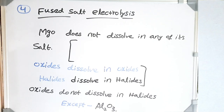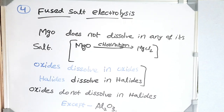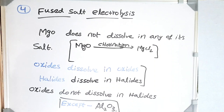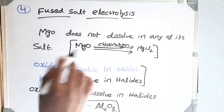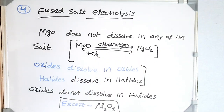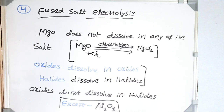For fused salt electrolysis of MgO — just like we did for aluminium — magnesium does not dissolve in any of its salts. Oxides dissolve in oxides and halides dissolve in halides, but oxides do not dissolve in halides, except for alumina, which made the Hall–Héroult process possible. Since MgO cannot dissolve in any of its salts, we need to convert it through a process called chlorination to produce MgCl₂, followed by fused salt electrolysis. Converting MgO to MgCl₂ is again not economical.